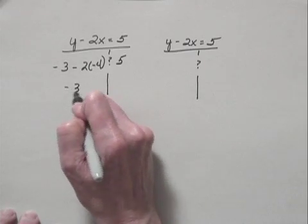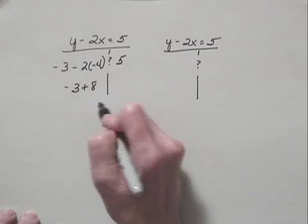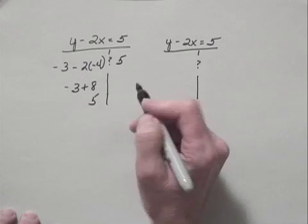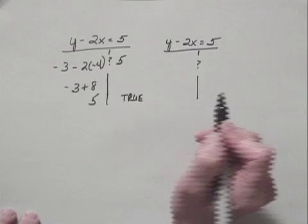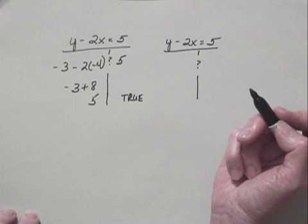I have negative 3 plus 8, and that is equal to 5. So this is true, and that shows us that the point (-4, -3) is a solution of the equation.